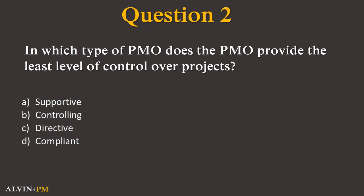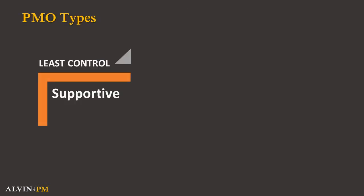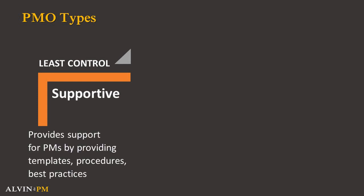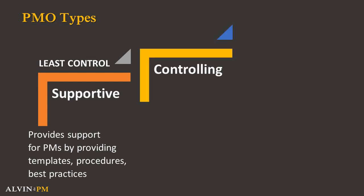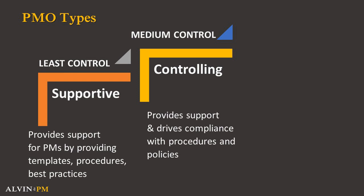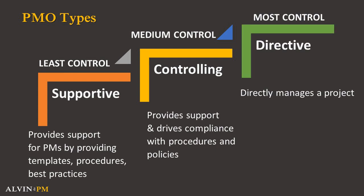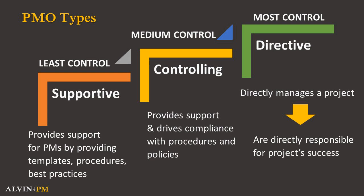Question 2. In which type of PMO does the PMO provide the least level of control over projects? A. Supportive, B. Controlling, C. Directive, or D. Compliant? The correct answer is A. A supportive PMO serves as a foundation and provides support for project managers by providing templates, procedures, standardized processes, and best practices for managing projects. In this sense, a supportive PMO acts primarily as a helping consultant and therefore has very low control over projects. A controlling PMO has an additional layer on top of a supportive PMO by providing support as well as driving compliance with the organization's procedures and policies. A directive PMO has the most amount of control and authority over a project since they directly manage a project, are responsible for the project's success and failure, and assign project managers to the different projects in the organization.